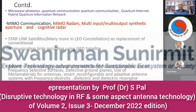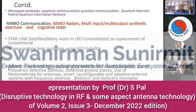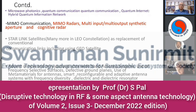MIMO communication, MIMO radars, multi-input multi-output, synthetic aperture, and cognitive radars — even the concept of radar itself will change when cognitive radars come to market. Starlink satellites and more LEO constellations will replace conventional communication links including geostationary ones. Advent of new and miniaturized ultra-wideband antenna systems, use of frequency selective surfaces, defective ground planes, metamaterials for antennas, smart reconfigurable and adaptive antenna systems with frequency diversity, dielectric resonator antennas as part of a system-on-chip will replace the concept of large antennas. With cognitive and smart arrays, reflectors may be replaced.